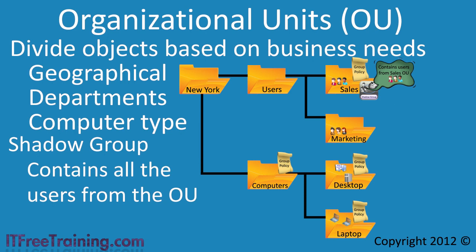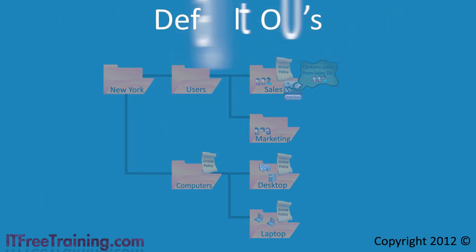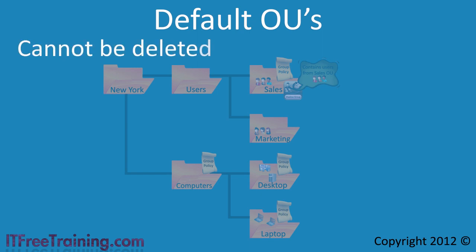This gives you a lot of flexibility, allowing you to configure the OUs in Active Directory to match your business requirements. In any Active Directory environment, there will be a number of default OUs created when Active Directory is first installed. These OUs cannot be deleted and only one of these can have Group Policy applied to it. The first one is Built In. This OU contains all the user accounts that normally exist only in the local accounts database. When a server is promoted to a domain controller, these local accounts are moved into the Active Directory database. For most Active Directory administration, you do not need to use this OU.